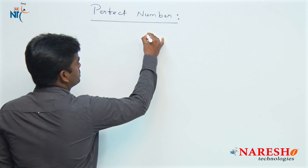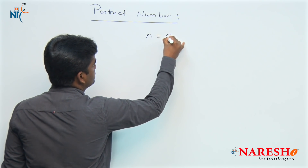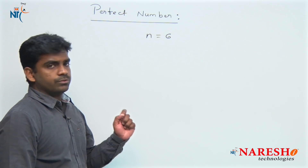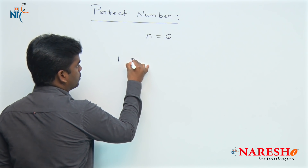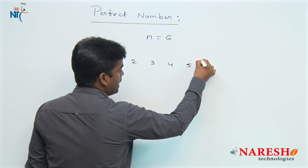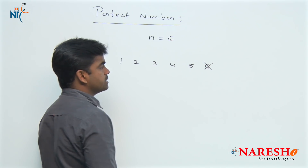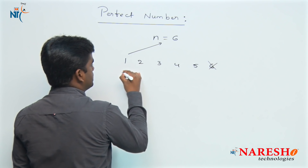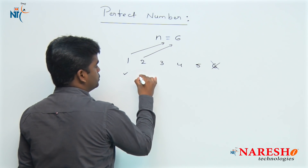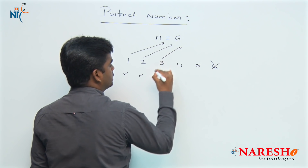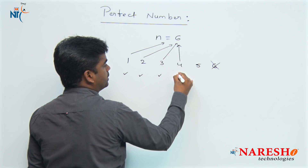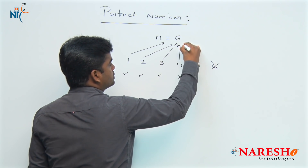Suppose we take one value, N equals 6. We need to find the factors of this number. Checking 1, 2, 3, 4, 5 — excluding 6 itself. 1 is a factor, 2 is a factor, 3 is a factor. But 4 is not a factor and 5 is not a factor.